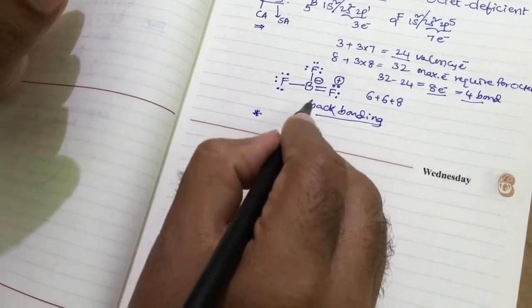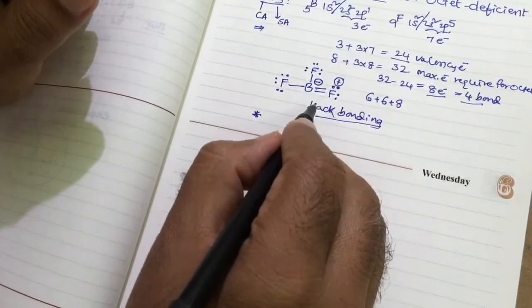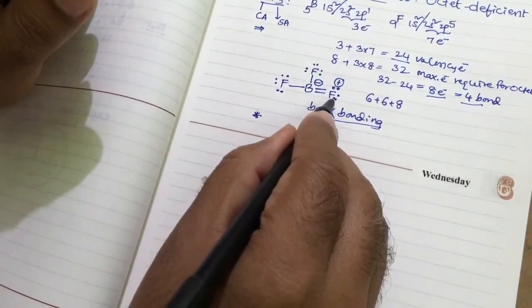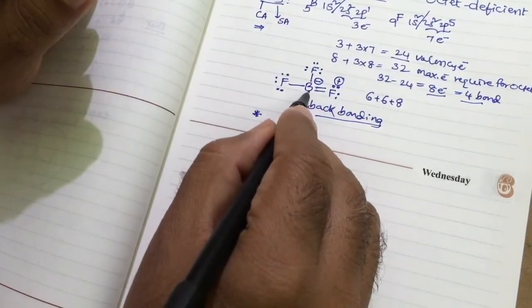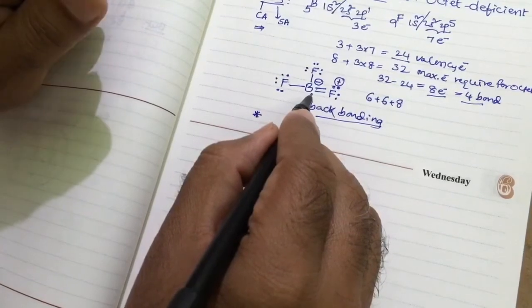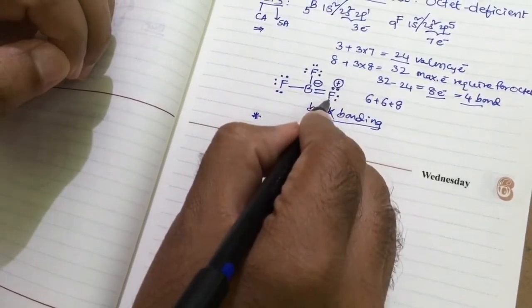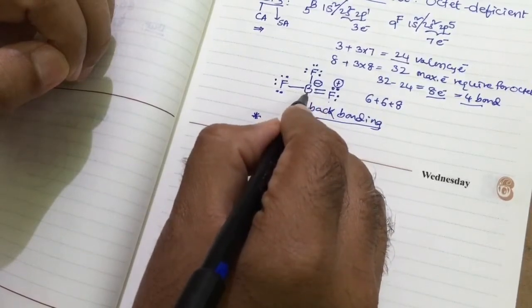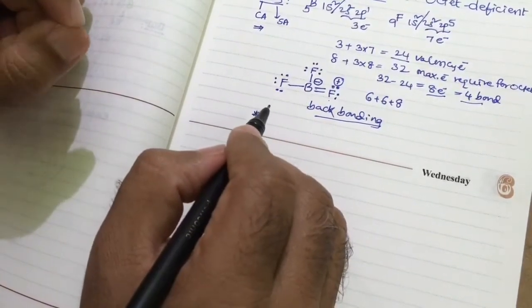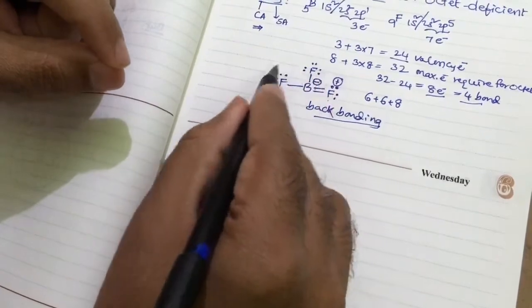Generally, the negative formal charge on the more electronegative atom and positive charge on the less electronegative atom, that is favorable condition. But here, reverse, formal positive charge present on the fluorine and negative charge present on the boron. This condition here, not favorable for this structure.